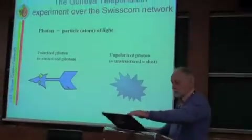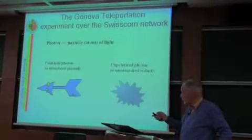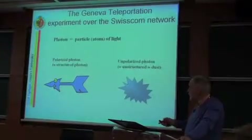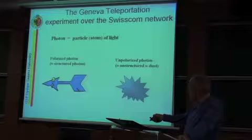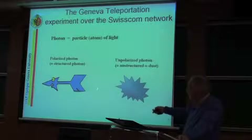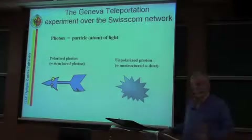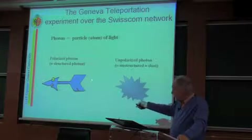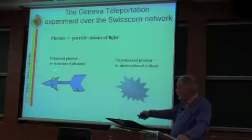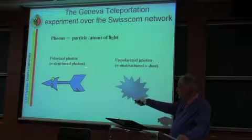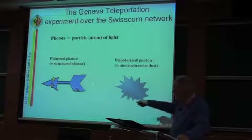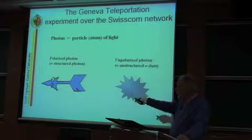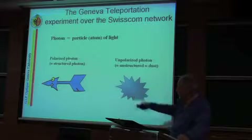I'm going to use photons because the real experiments were done with photons — that's what I'm going to report on. I need a picture of a photon: it's a particle of light, but you can also think of an atom if you prefer. Importantly, this photon carries some structure — some form, some quantum state — and in practice it means it's a polarized photon.